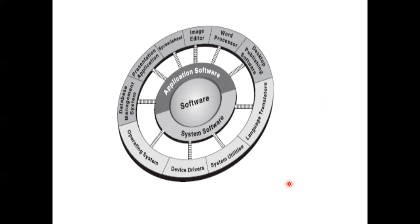System software helps the computer to run — examples include operating systems, device drivers, system utilities, and language translators. Without an operating system, your computer will not run. Without device drivers, your system will not run. These are all system software without which your computer will not work. Application software represents the tasks the user wishes to perform, while system software forms the lower foundational layer.